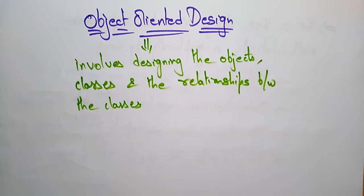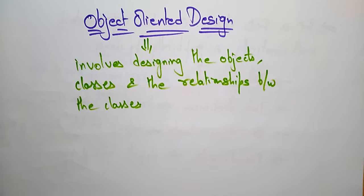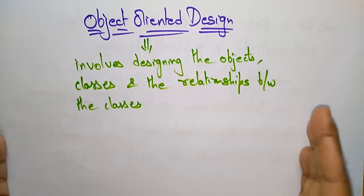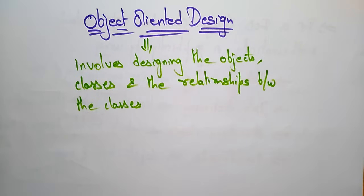If you are using object-oriented concepts in a program, you first need to design what objects are used in the program, what classes you are using in this software, and what is the relationship between those classes. You need to be aware of these before you are going to design an object.